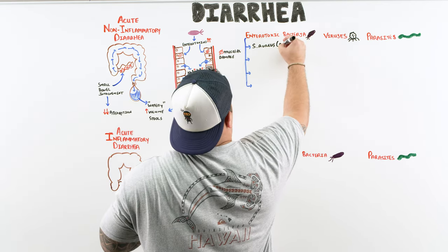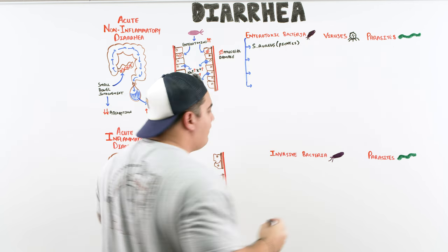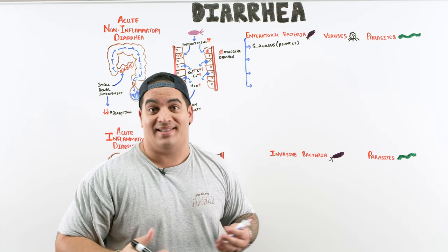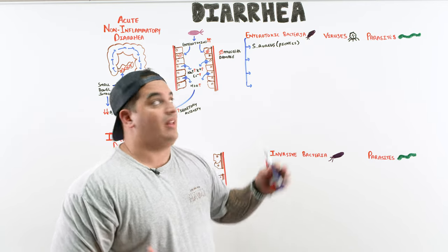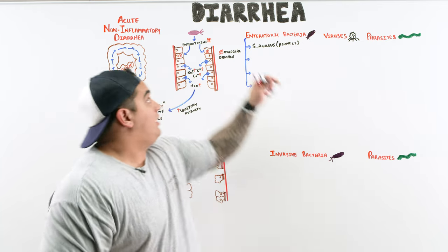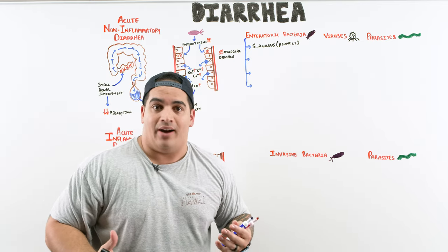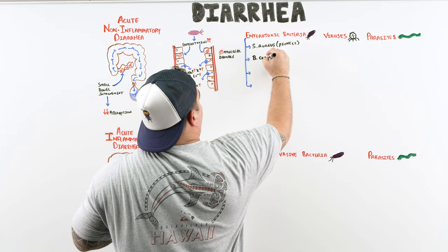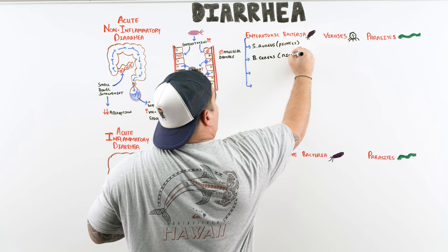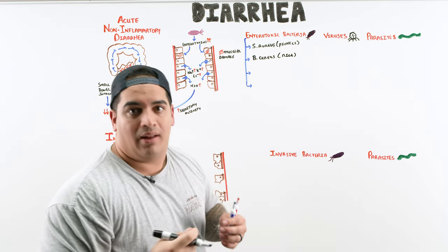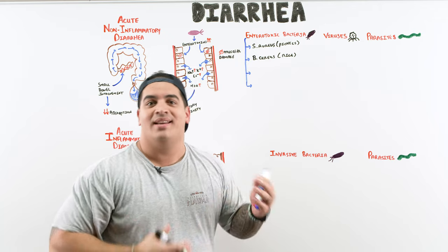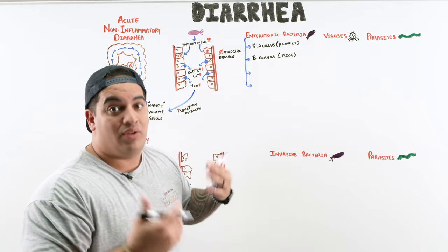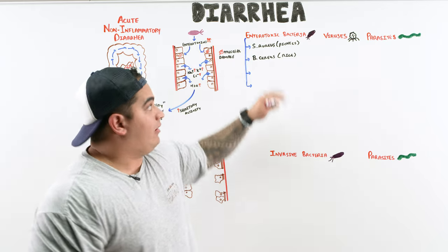The next one is Bacillus cereus — think about rice. In people who eat rice and reheat it, this bacteria can sit in the rice and cause acute diarrhea along with vomiting within a couple of hours after eating.